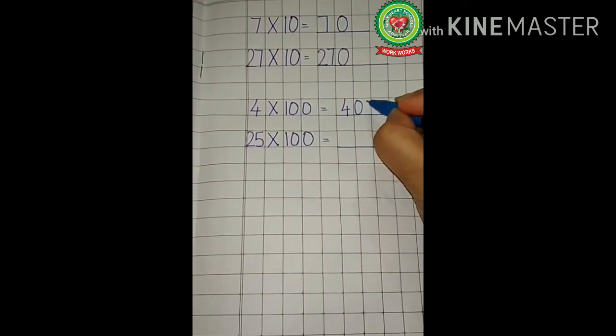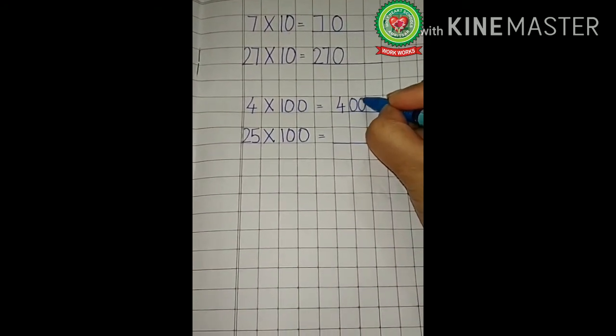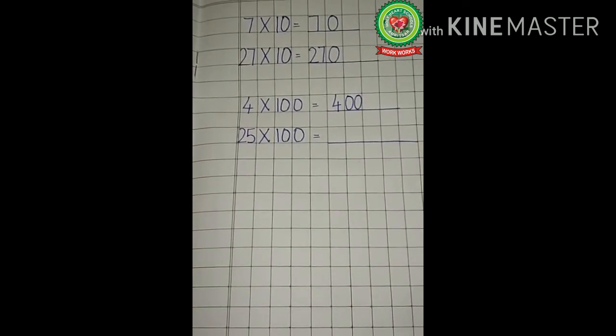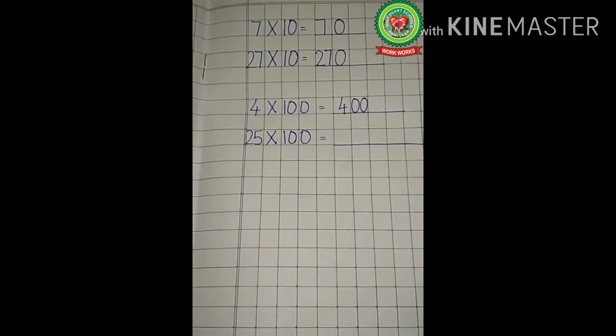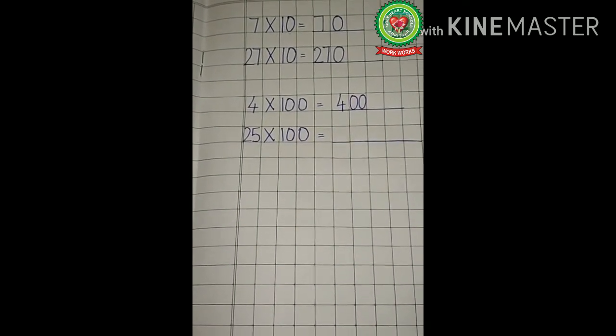There are two zeros, so we write two zeros after the digit. The answer is 400. In the same way, see the next example.